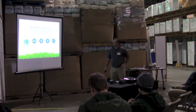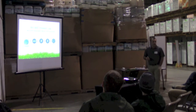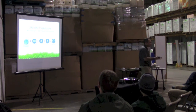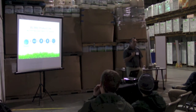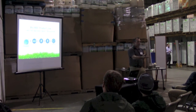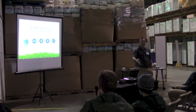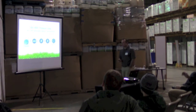The Bio 800 product line has 800 species of active, diverse microorganisms, eight sources of microbe food, three sources of nutrient enhancers, and other micronutrients. This is living biology in a bottle — you can see the refrigeration systems here. It's refrigerated because it's alive. When it's cold, it becomes dormant. We keep it dormant so that when the application is done, it is working at peak performance at the exact same time you're putting down other ingredients.